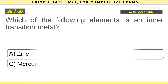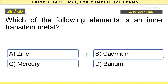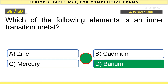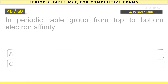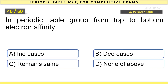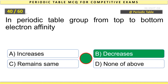Which of the following elements is an inner transition metal? Barium. In the periodic table, group from top to bottom, electron affinity decreases.